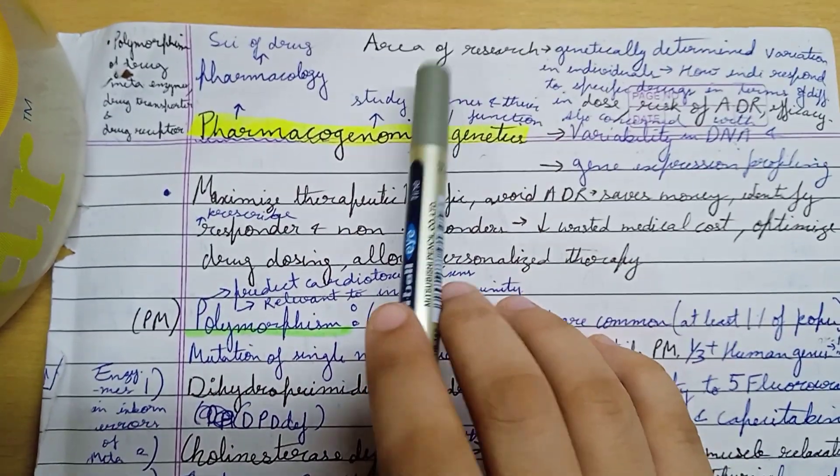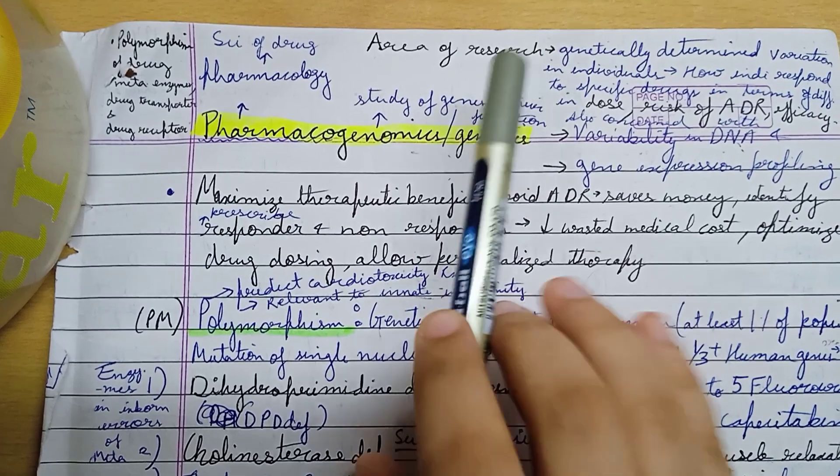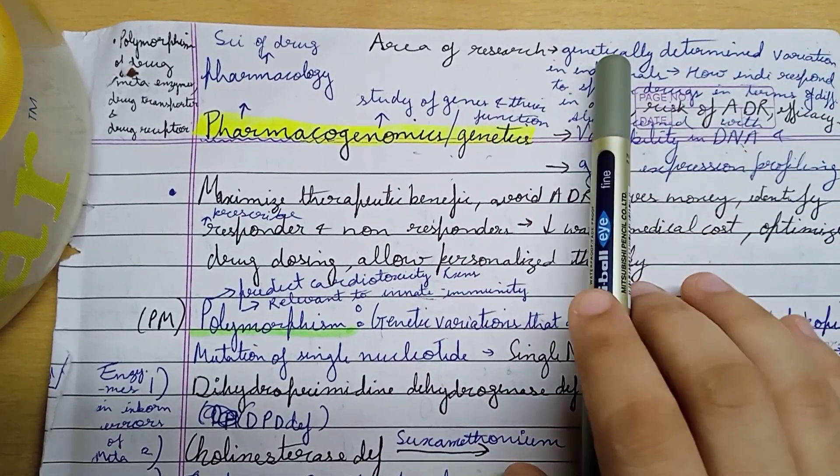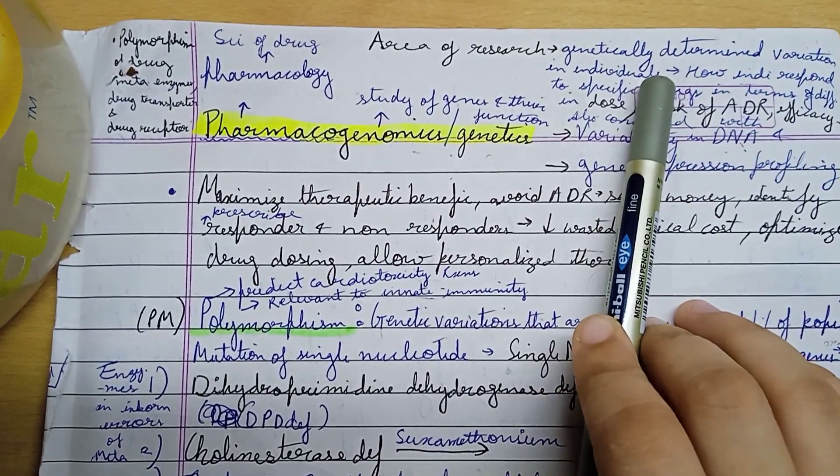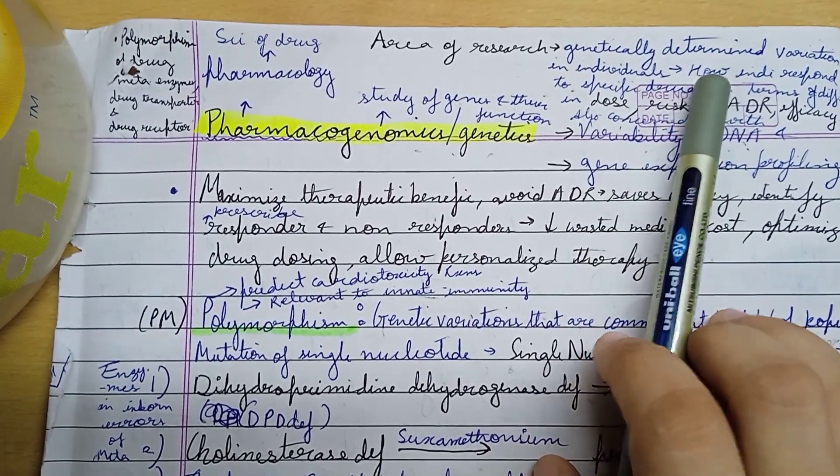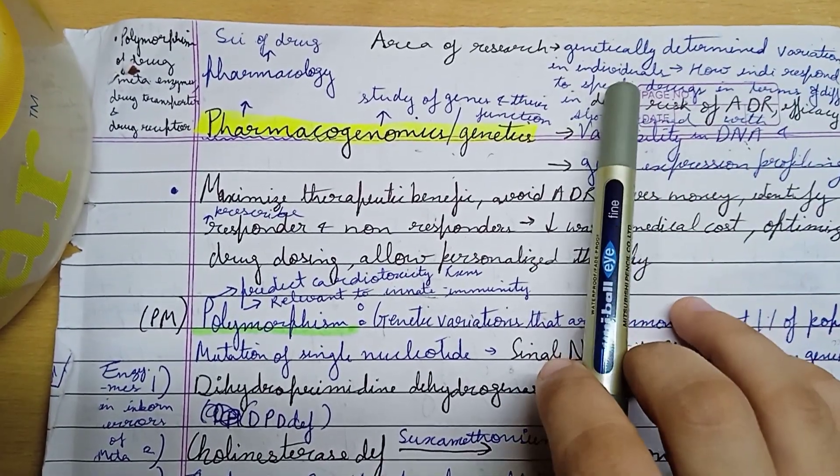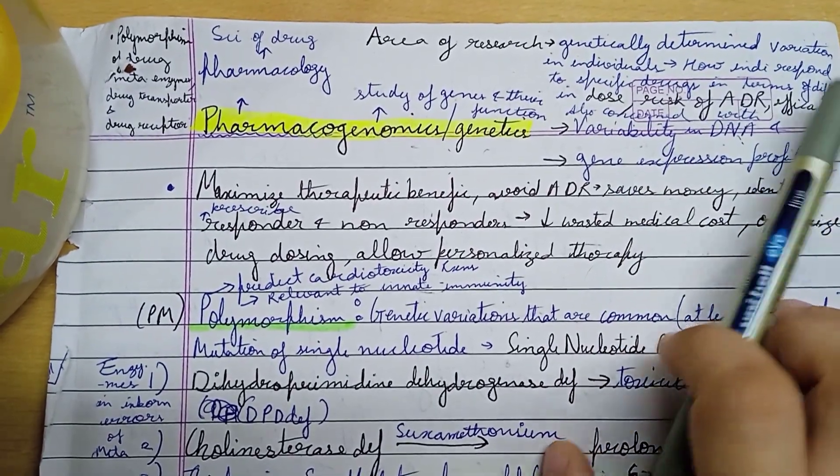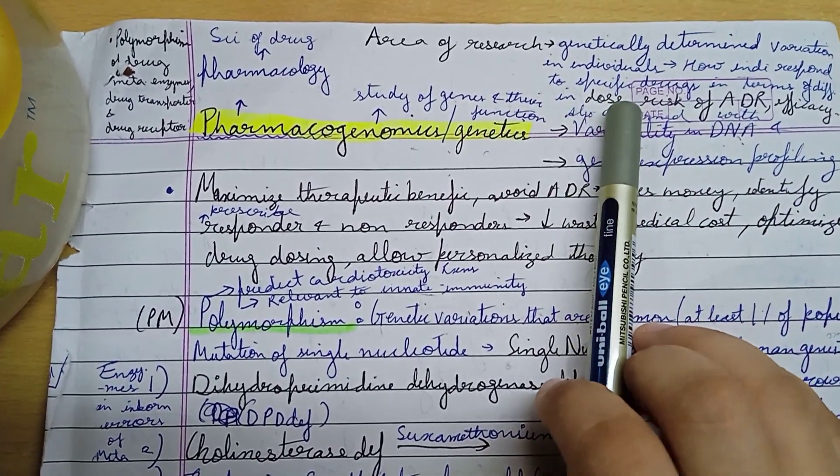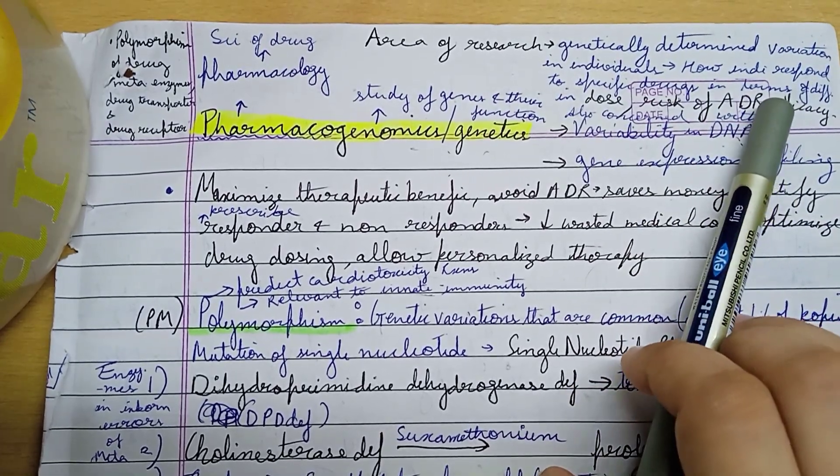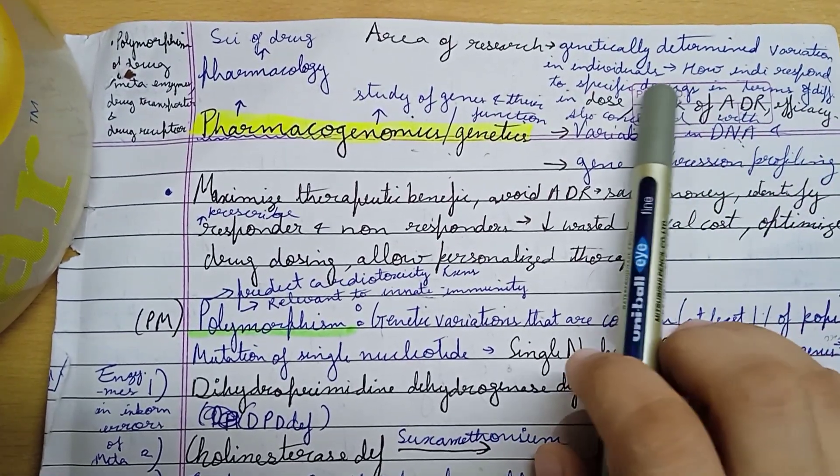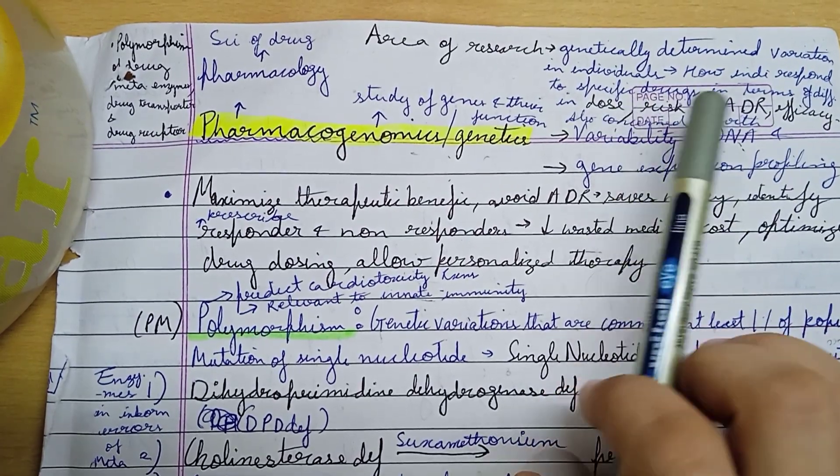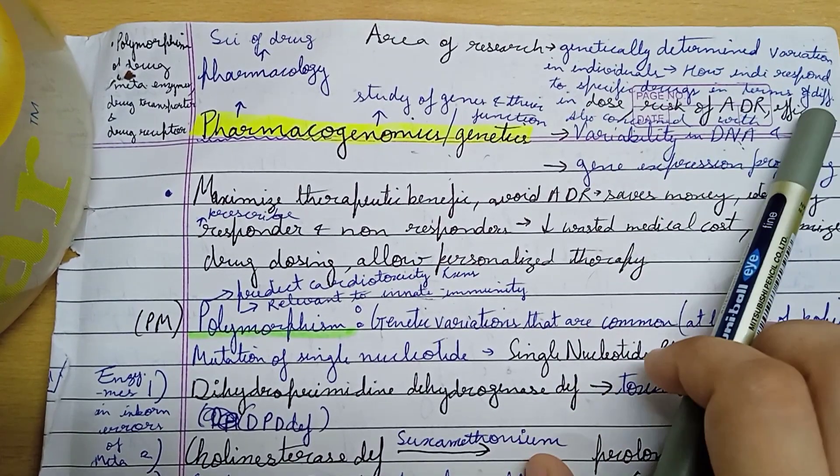This area of research focuses on genetically determined variation in individuals—how individuals respond to specific drugs in terms of differences in dose, risk of adverse drug reactions, and efficacy.